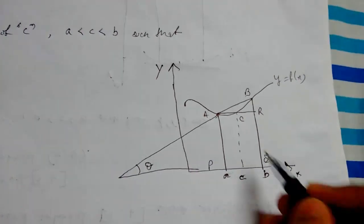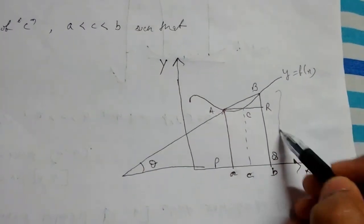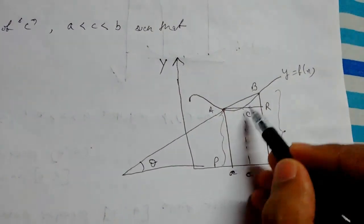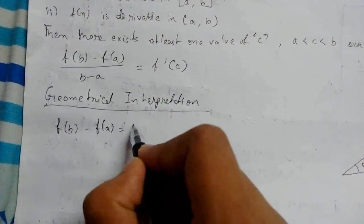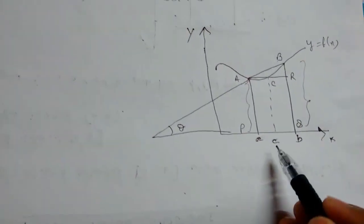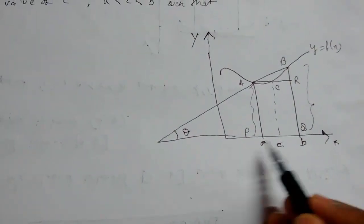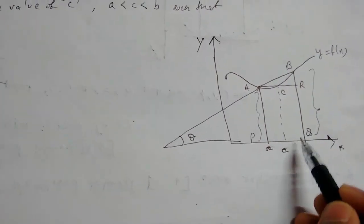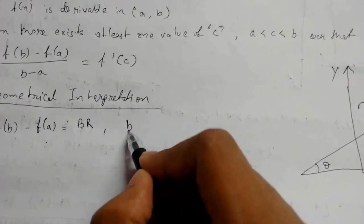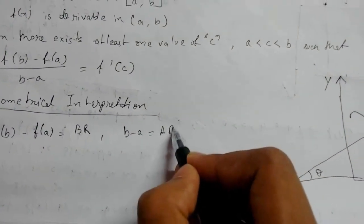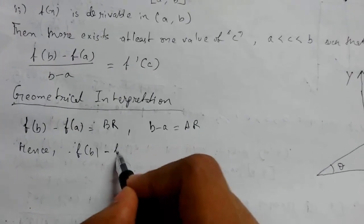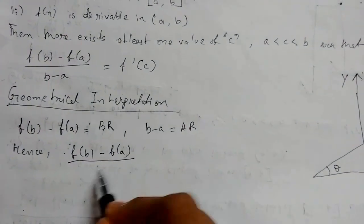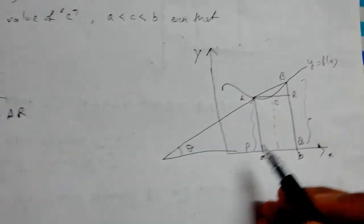From the graph we see that f(b), which is this part, minus f(a), which will give us BR. So f(b) - f(a) is equals to BR. And b - a will give us AR or PQ, which is equals to AR. So b - a is equals to AR.